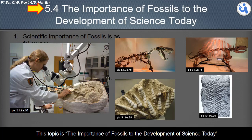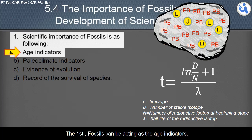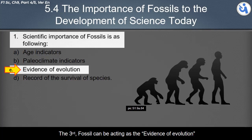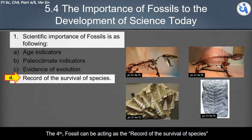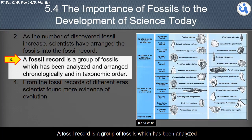This topic covers the importance of fossils to the development of science today. The scientific importance of fossils is as follows: first, fossils can act as age indicators; second, as paleoclimate indicators; third, fossils can act as evidence of evolution; and fourth, fossils can act as a record of the survival of species. As the number of discovered fossils increases, scientists have arranged them into the fossil record — a group of fossils that has been analyzed and arranged chronologically and in taxonomic order.